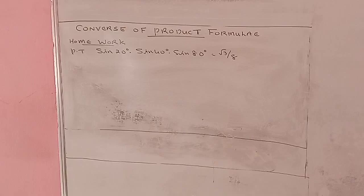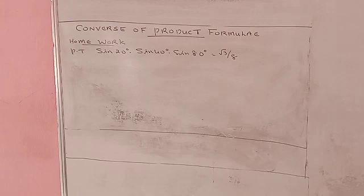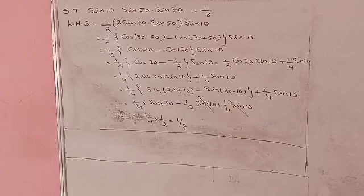Next, homework: prove that sin 20° · sin 40° · sin 80° = √3/8. You can replace 40° by (60°-20°) and 80° by (60°+20°) and apply the trick formula to get the answer. We solved the previous problem using the trick method in around 3 or 4 steps.